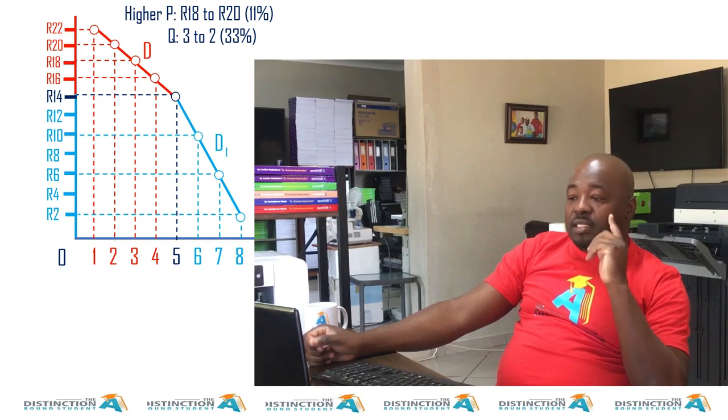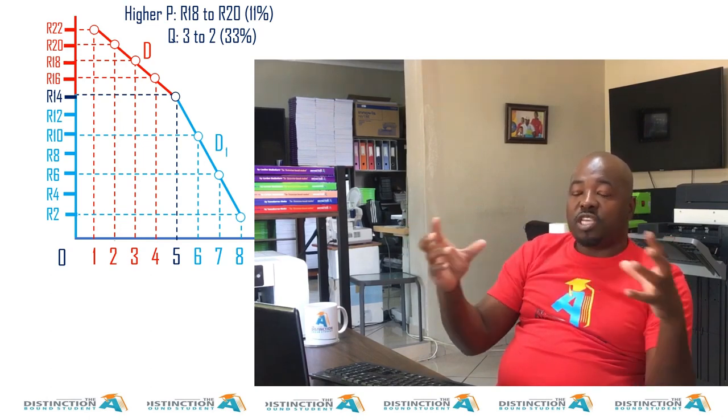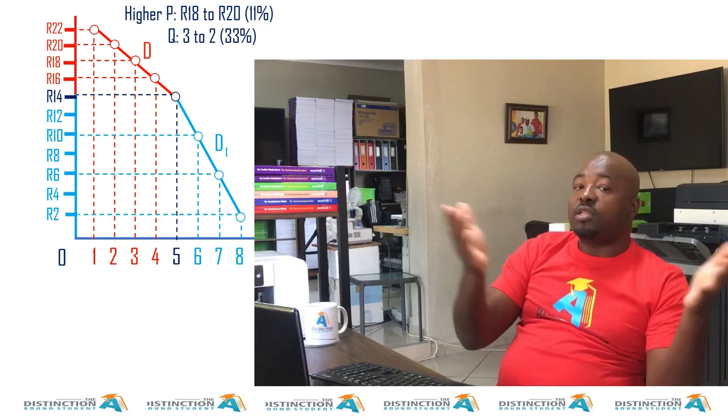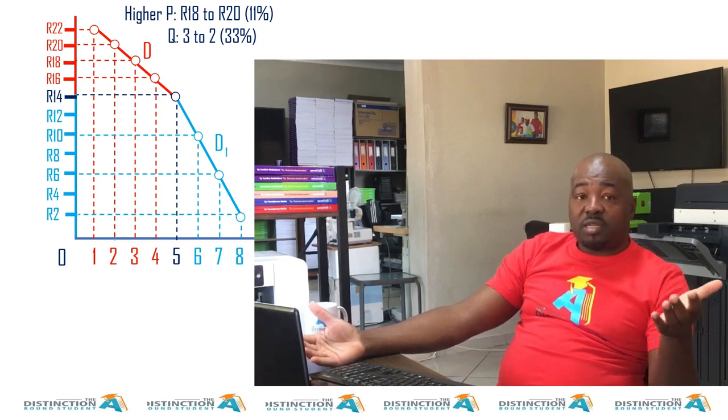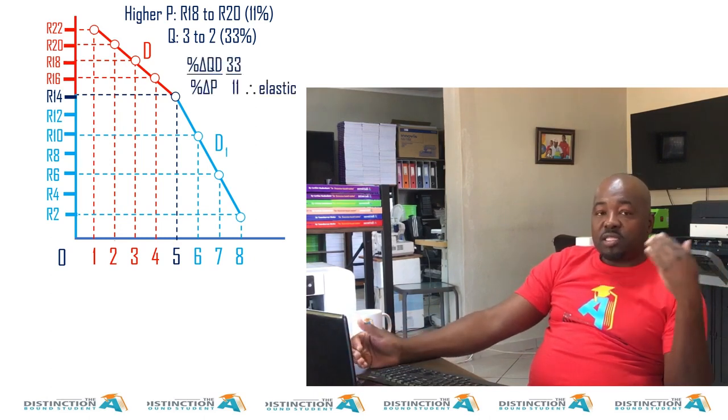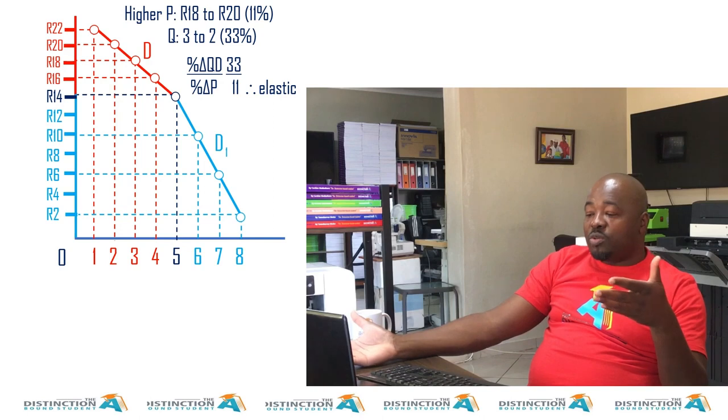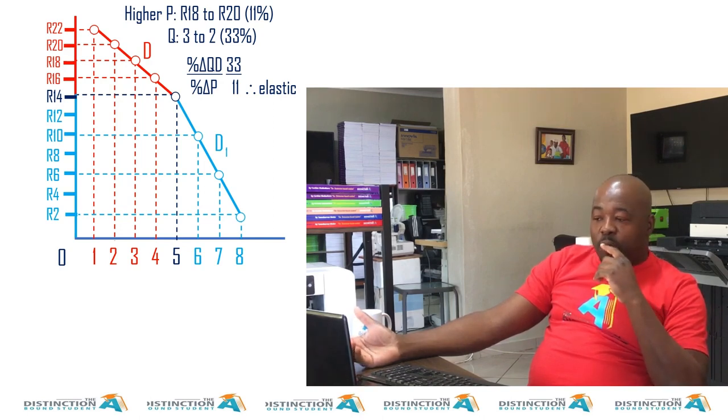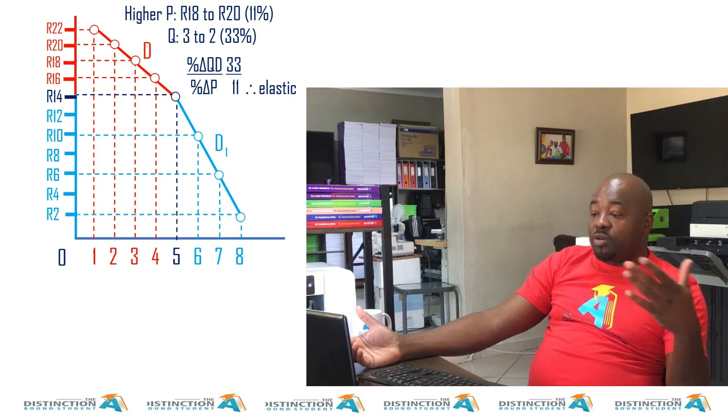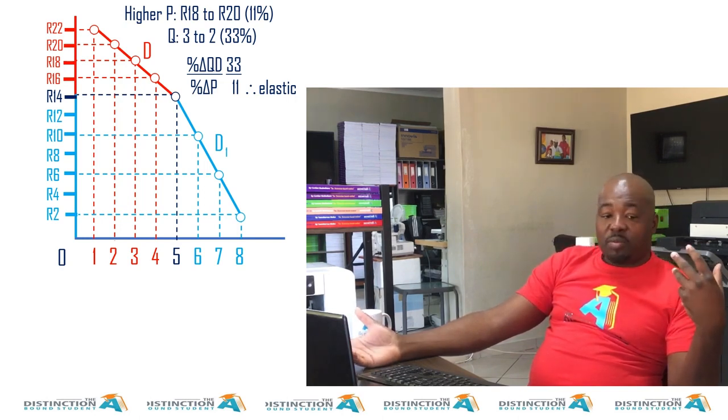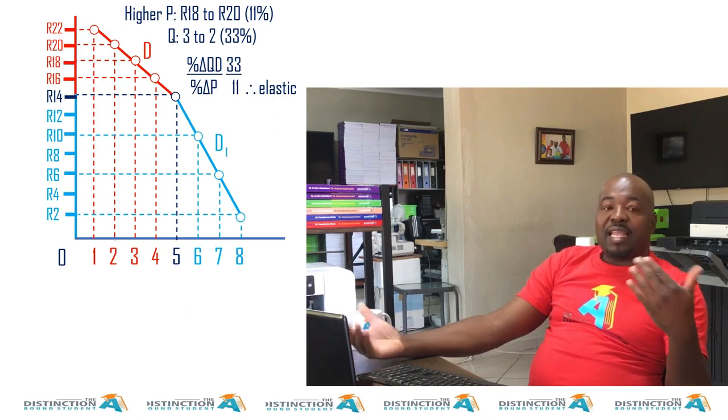You can calculate to see if I'm right. Then that increase in price would cause a response or would change quantity demanded. According to the rule of demand, it would cause demand to drop by 33%. Now using our formula percentage change in quantity demanded divided by percentage change in price, it will be 33 divided by 11. Therefore, which will give us an answer which is greater than one. 11 goes into 33, three times. So it will give us three. Our answer is definitely greater than one, which means it is elastic.